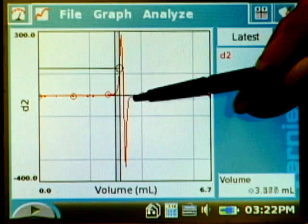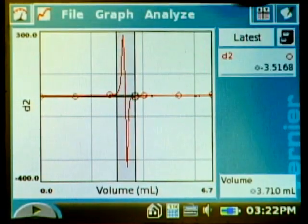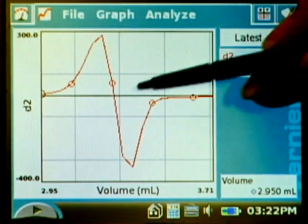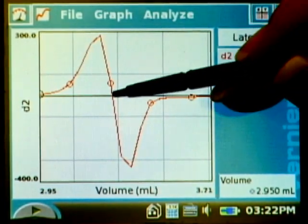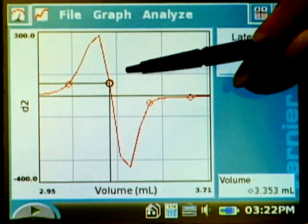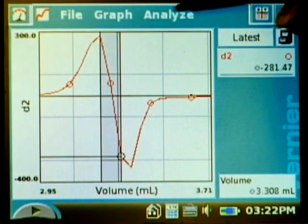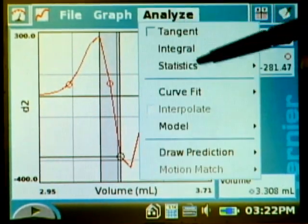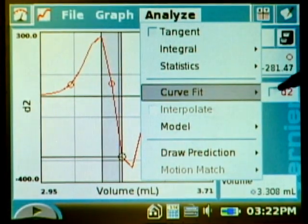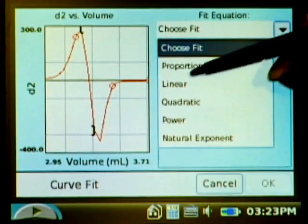So if I do a selection right around that point and then do a zoom in, you can see right there where it crosses. I'm going to select a region of this line where we have a linear portion and do a linear curve fit on that section of the second derivative. So my fit is linear.